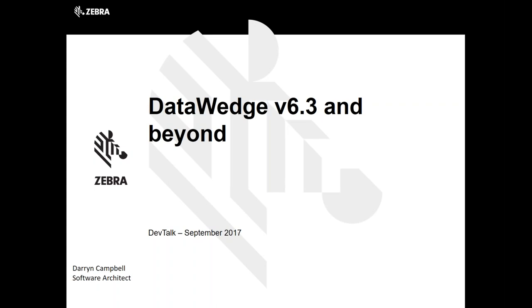I'd like to now introduce Darren Campbell and turn it over to him to teach us about the latest version of DataWedge. Thank you, Dan. If you strictly want the latest version of DataWedge, you're looking at version 6.5. However, the most relevant version for most people on this call is going to be 6.3, and we'll be talking into why that is as we get into the presentation.